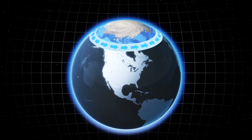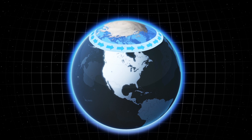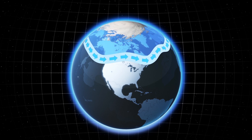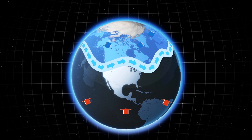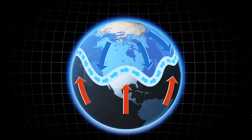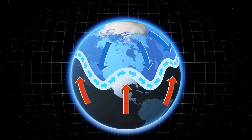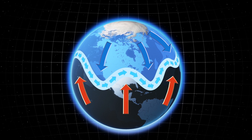The Polar Vortex is usually held in place by a current called the jet stream. Disturbances in the jet stream can push frigid, wintry air to parts of Canada and the U.S., while high-pressure systems of warmer air bulge northwards elsewhere.